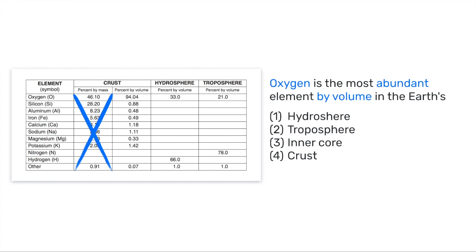So I'm going to cross that out — we're not even going to look at that. I know it's going to be one of the other three columns. Looking at oxygen: in the crust by volume it's 94%, in the hydrosphere it's 33%, and in the troposphere it's 21%. So if we're looking for most abundant — again, like the previous question, we're looking for the highest number — that's 94.04%. So the answer would be Earth's crust.